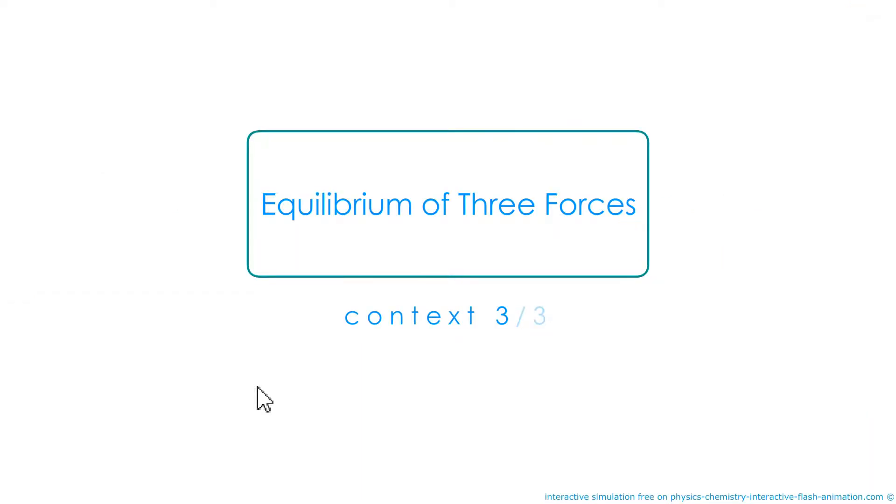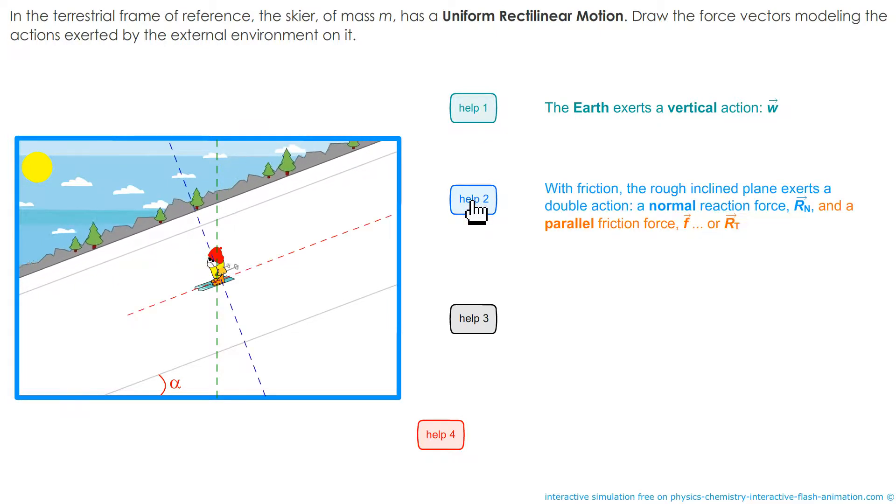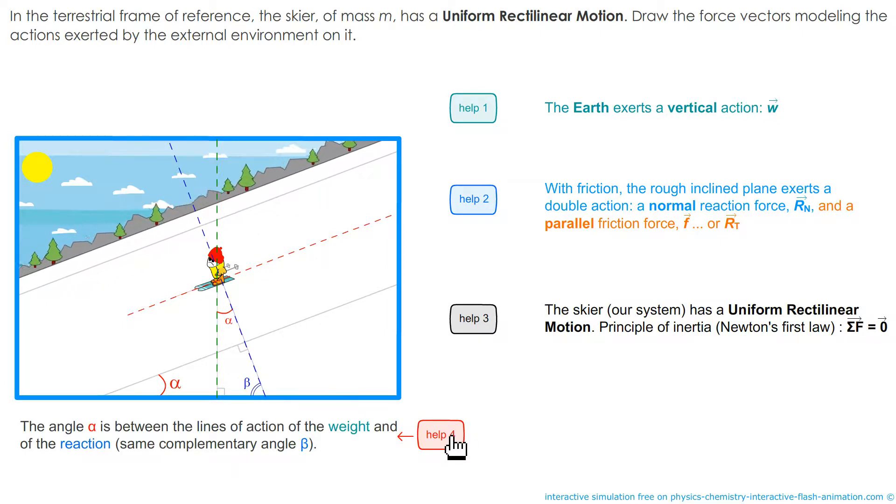Another example. It is not a balance, but it is the same for the reasoning. For the tracing of the forces since it is a question of a uniform rectilinear movement. And that the principle of inertia tells us that the sum of the forces will be zero. For the weight, the line of action. The fact that there are two reaction forces: normal reaction and tangential reaction, known as the friction force. We know that the sum of the forces is zero. And we know that the angle that is here is the one that is there. It is the same. Why? Because they have the same complementary angle, Beta.